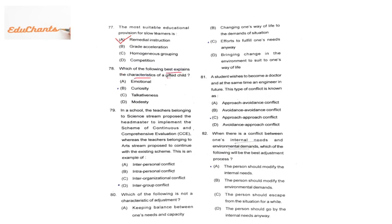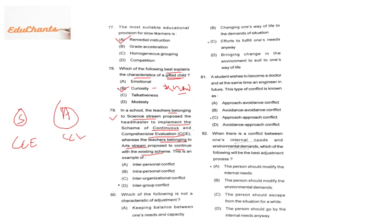Question 78: which is a characteristic of a gifted child? Not emotional, not talkativeness, not modesty — but curiosity, the eagerness of knowing everything. A gifted child is very intelligent and eager to learn. Question 79: science stream teachers propose implementing CCE while art stream teachers oppose it. This conflict between two groups is called intergroup conflict.